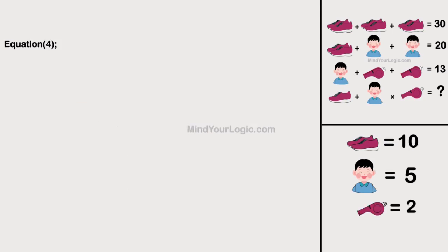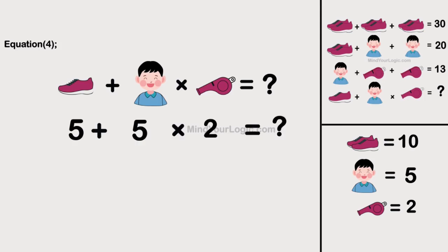Now, solving the final equation. Shoe plus boy multiply by whistle equals question mark. Substitute the values we get.